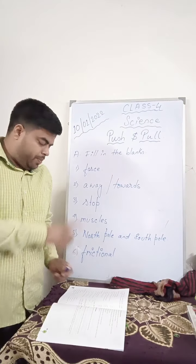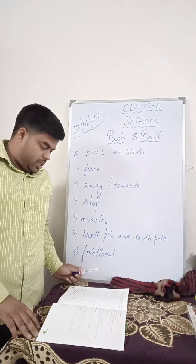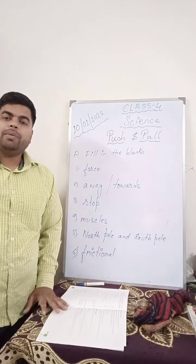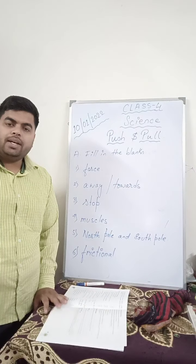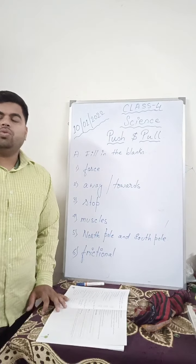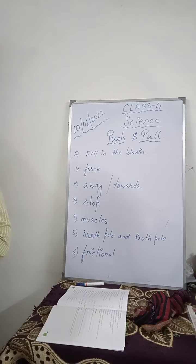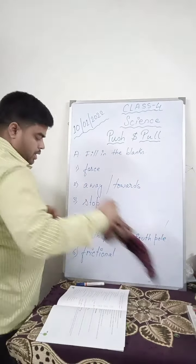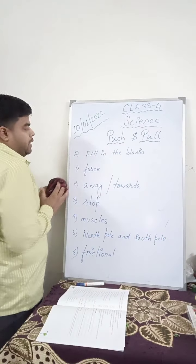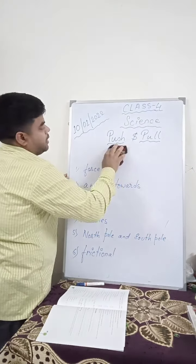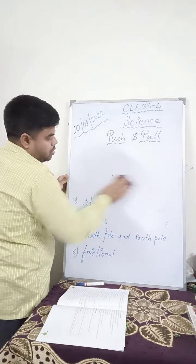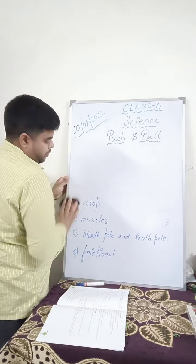So children, please note this down. And remember, when you write the answers, you have to write the questions also. Now, number B — true and false. State whether true or false.